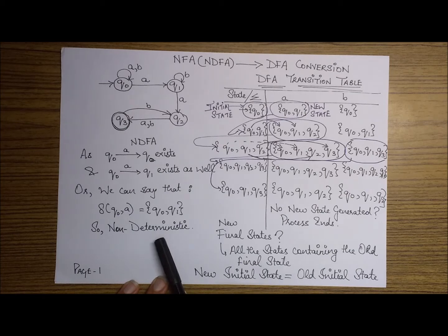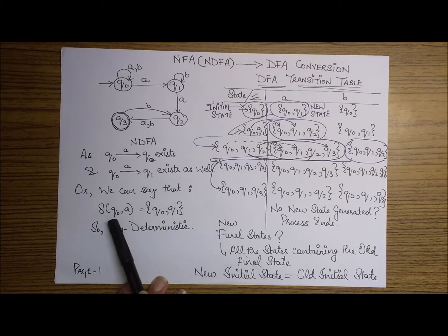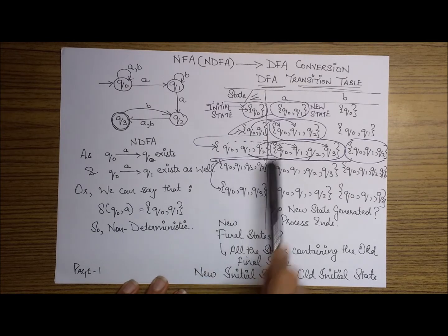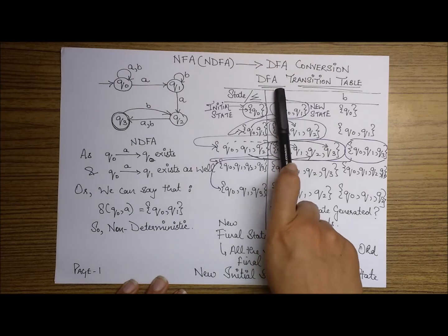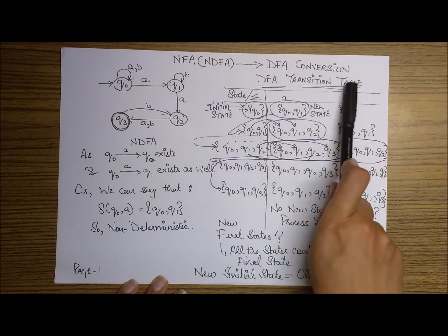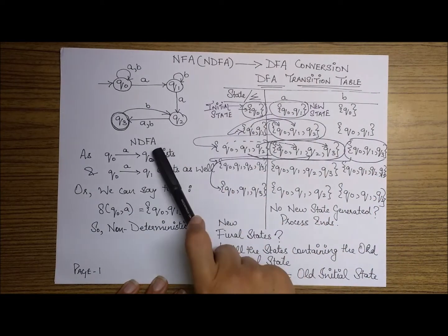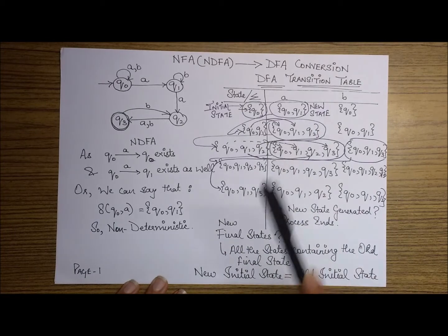Also, with the help of the transition function, we can represent it accordingly. Next comes the task of converting it into a DFA. Here we have a DFA transition table — let's see how we can convert it.